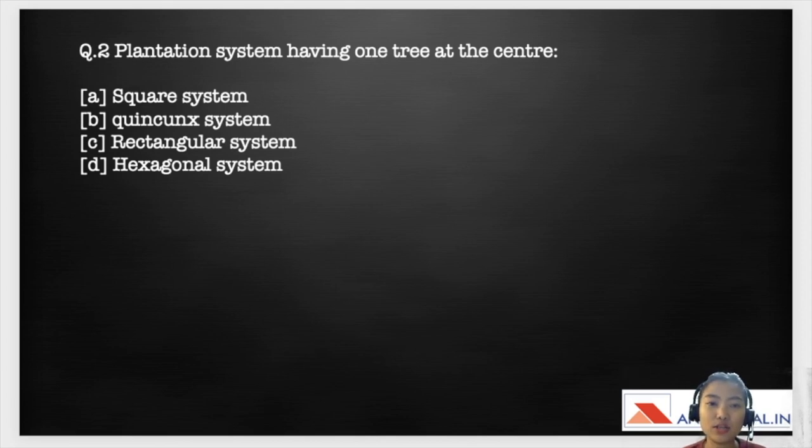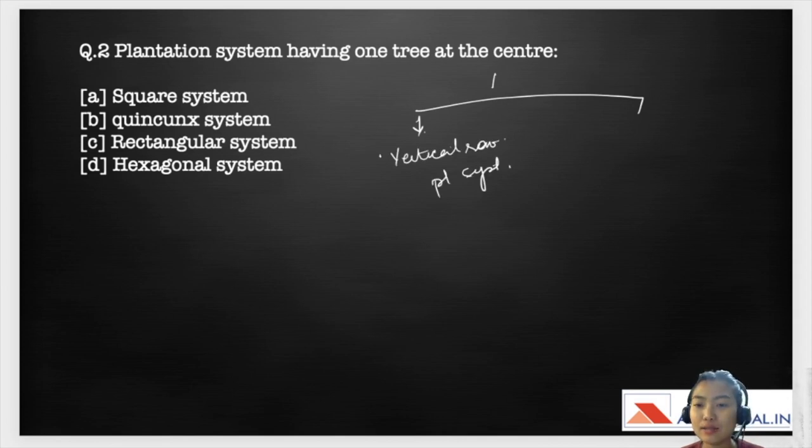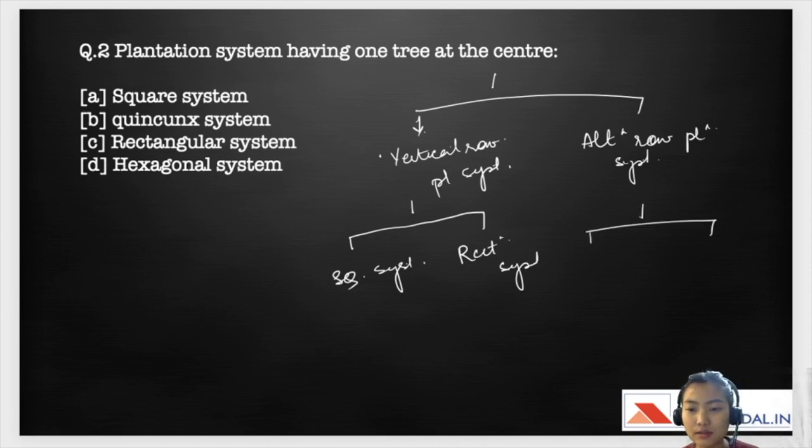Moving on to the next question, the next question says plantation system having one tree at the center: A square system, B quincunx system, C rectangular system, D hexagonal system. Before going to the answer let us discuss on the layout. This is based on the layout of an orchard. It's mostly divided into vertical row planting system and alternate row planting system. Under vertical we have square system and rectangular system. Under alternate we have diagonal, hexagonal, triangular, and contour.